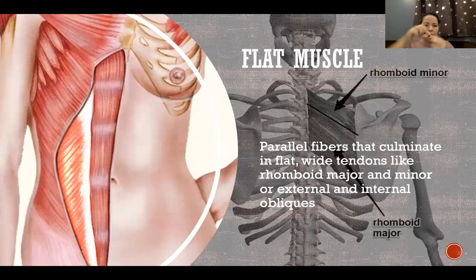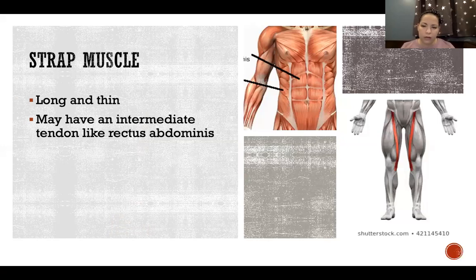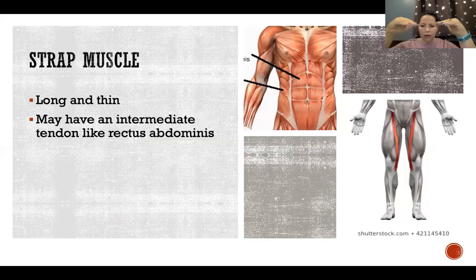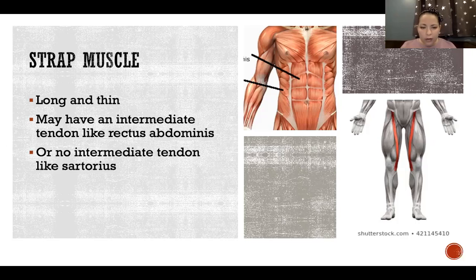A strap muscle is long and thin and can have an intermediate tendon, like rectus abdominis. The fibers run in a superior-inferior direction with intermediate tendons separating them every few inches — that's what gives the six-pack appearance when rectus abdominis is developed with low abdominal fat. You can see where the muscles have hypertrophied but are still anchored by those intermediate tendons. Sartorius is an example with no intermediate tendon.